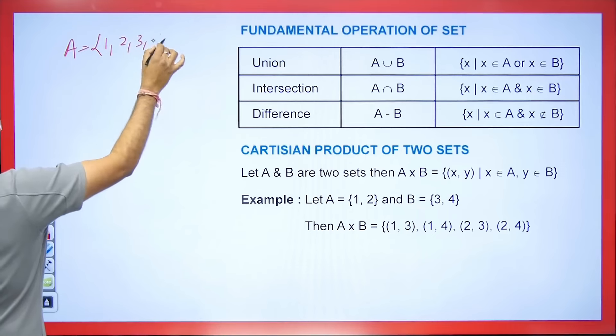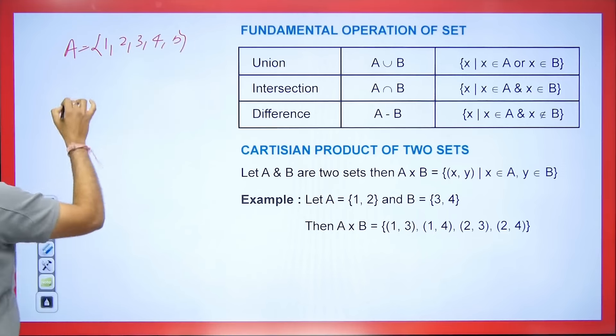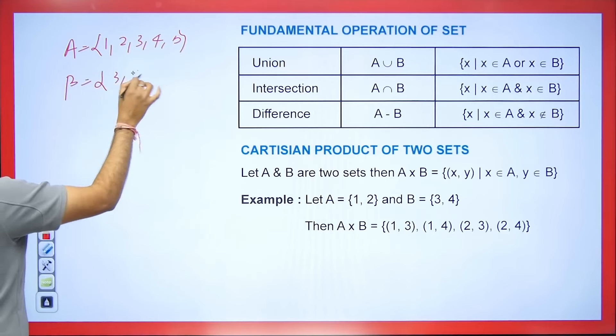Let's say we have set A = {1, 2, 3, 4, 5} and set B = {3, 4, 6}. First, we will talk about union. Union means what will be the total of both sets combined. So 1, 2, 3, 4, 5, and 6 are all coming. If we combine both of them, we don't repeat elements — if 3 appears in both, we write it only once. This is union.